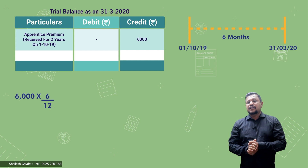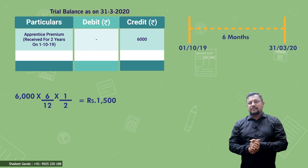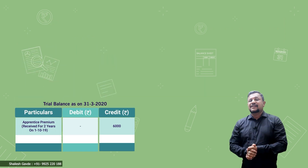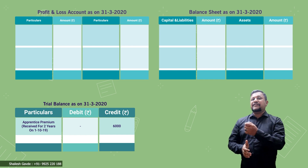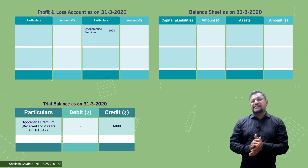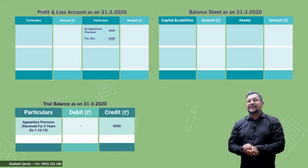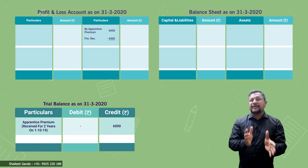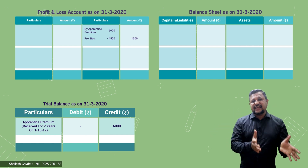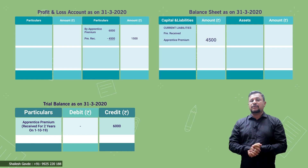Calculating: 6,000 × 6/12 = 1,500. So the current year's apprentice premium income is 1,500, which should be credited to the profit and loss account. The entire adjustment becomes pre-received apprentice premium. For the effects: in P&L credit side (inner column), record apprentice premium 6,000. Then deduct 4,500 as pre-received apprentice premium, leaving an outer column figure of 1,500 as the current year's income. The second effect: show pre-received apprentice premium 4,500 on the liability side of the balance sheet.